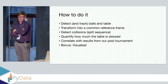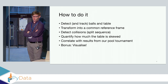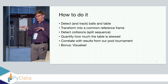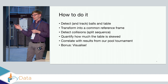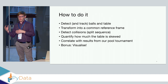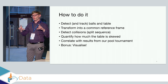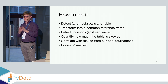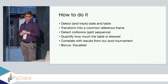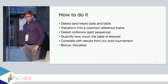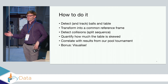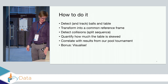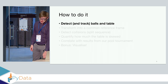I split this into a few tasks. First, I detected where the table was and where the initial positions of the balls were, then used OpenCV to track those. Then I transformed that into a reference frame — from a trapezoid into a two-by-one rectangle — then detected collisions, split the sequence into different tracks the balls were going, tried to quantify how much skew from a straight line there was, and correlated that with results from our pool tournament. There's a bonus visualization at the end as well.